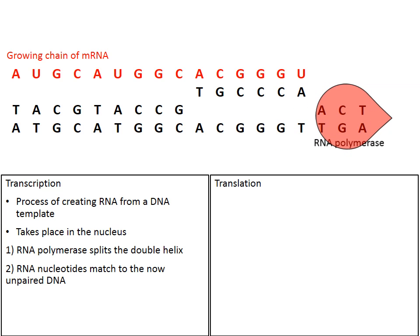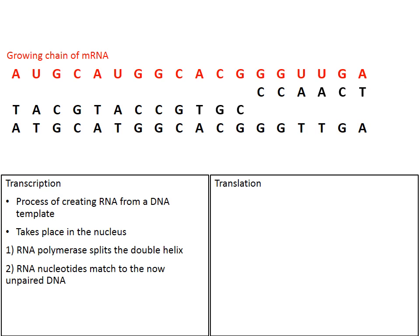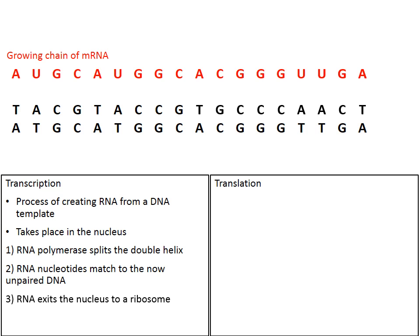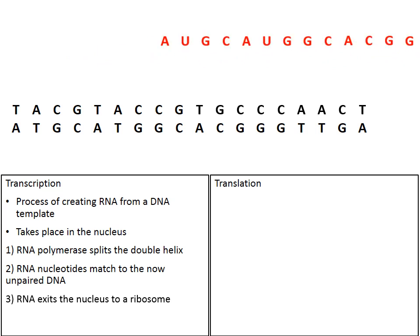As we reach the end of this transcription process, the RNA polymerase pries apart the DNA letters — in this case ACT. The ACT is exposed and along comes RNA UGA. The DNA zips back together, the RNA polymerase detaches, and the rest of the DNA binds back together. What happens next is the RNA exits the nucleus and travels to a ribosome. It's going to a ribosome, where we pick up the process of translation.